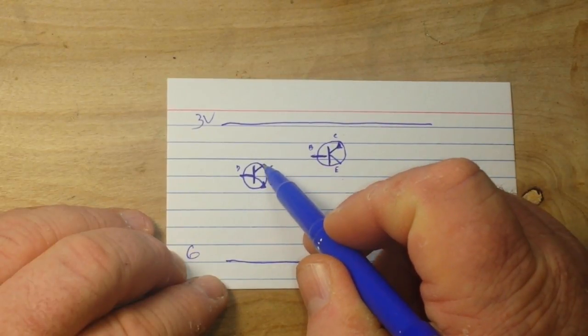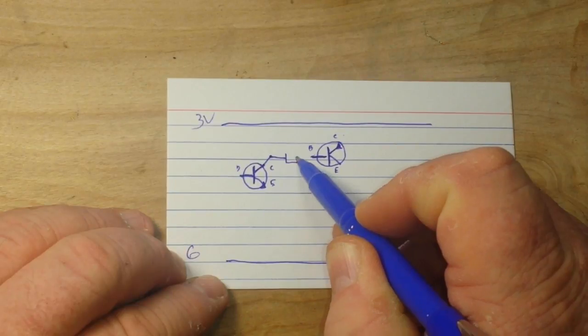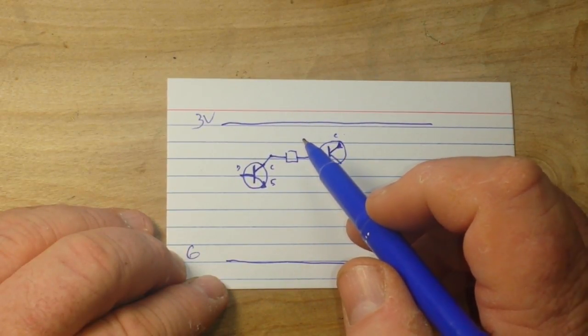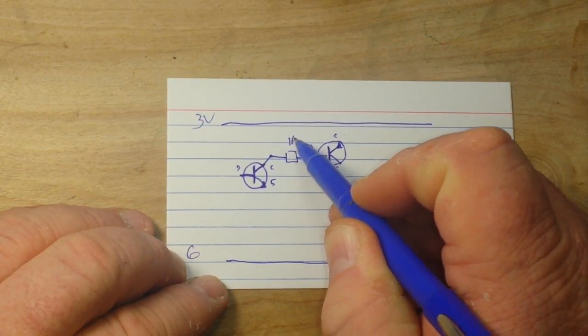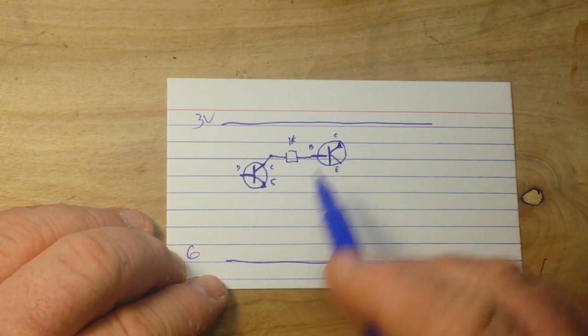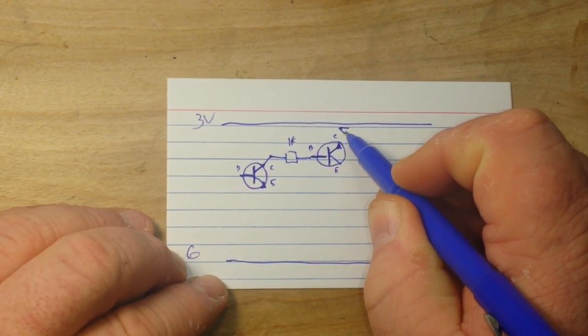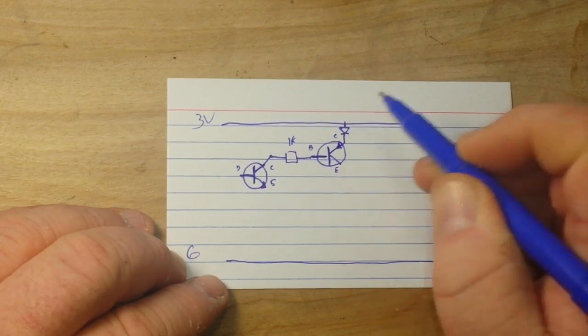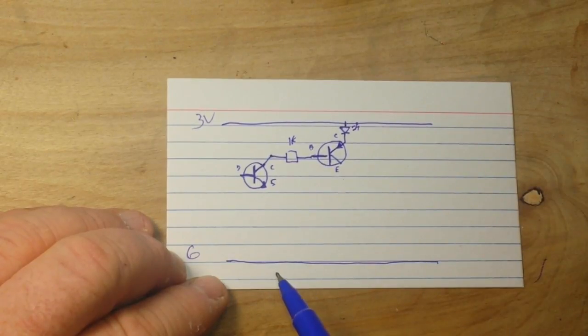is we'll take our collector here from the NPN, bias it with, I don't know, 1K, 1K should do it, 1K resistor into the base there, and we'll put a diode here, LED, of course, that will be our indicator.